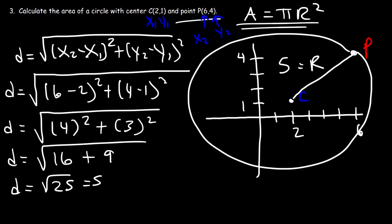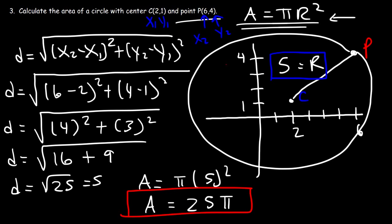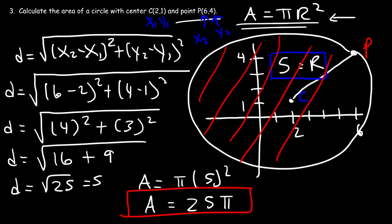So the radius of the circle is 5 units. Now we can calculate the area: pi r squared equals pi times 5 squared. 5 squared is 25, so the answer is 25π square units. That's the area of the circle, which is the area of the shaded region.